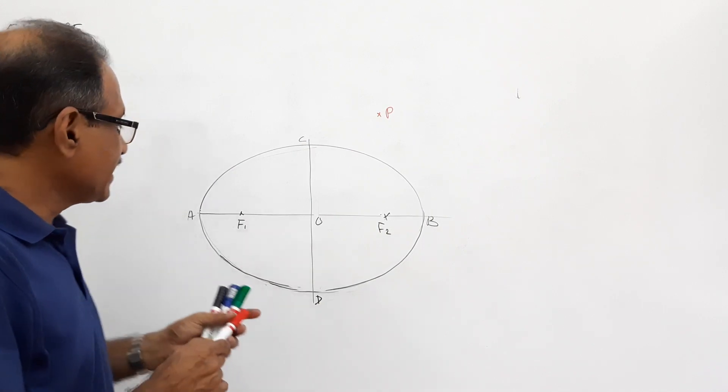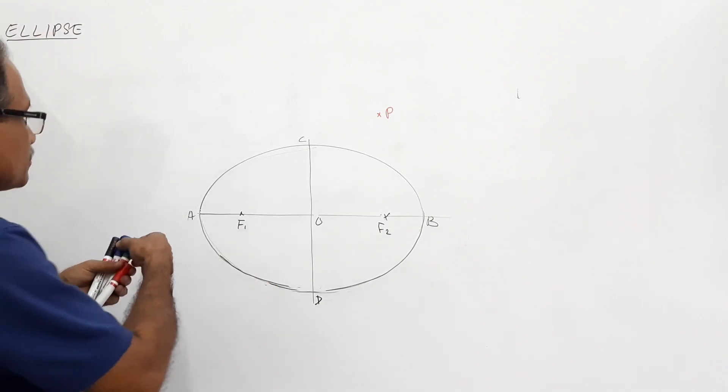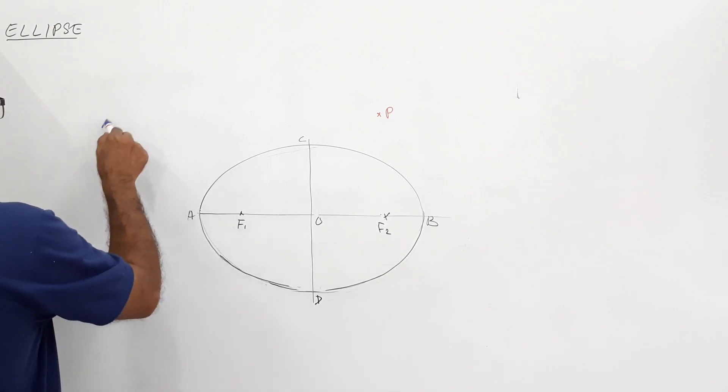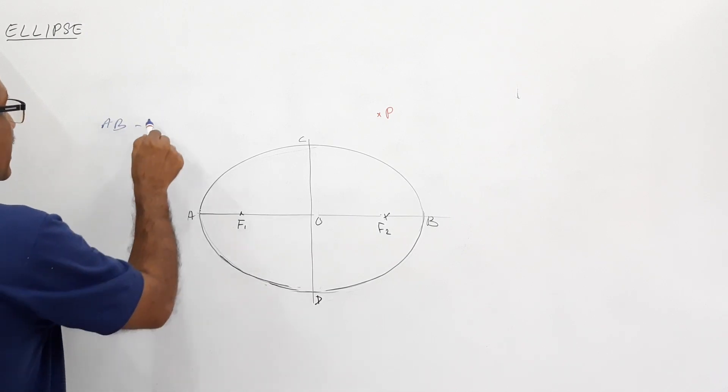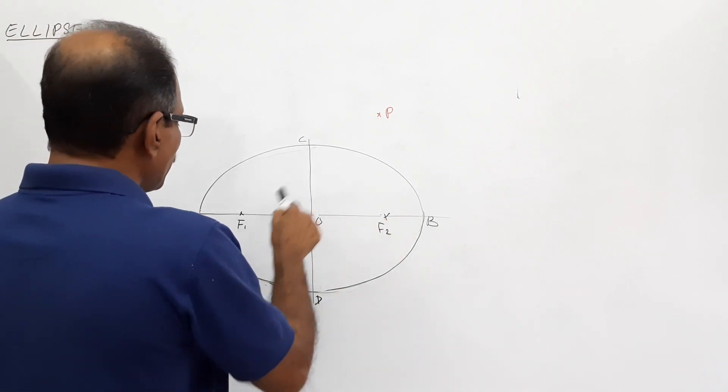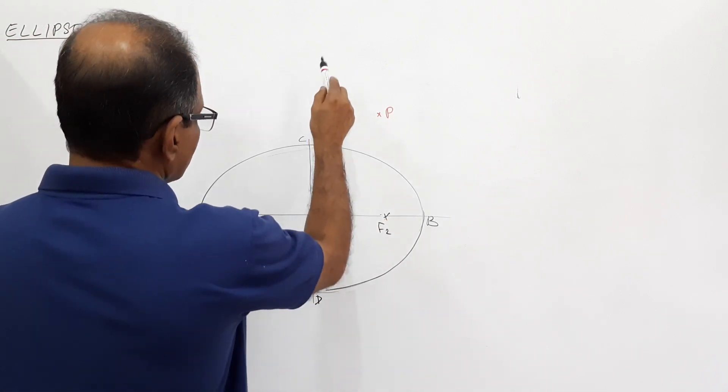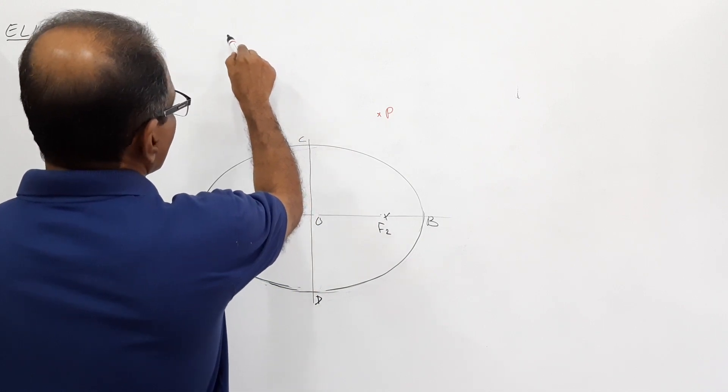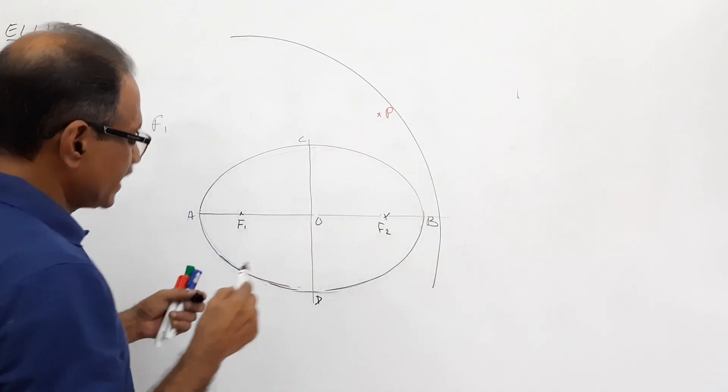What we do is, take AB in your compass - radius is AB, AB is the major axis. F on a center, draw an arc. The arc will go something like this.